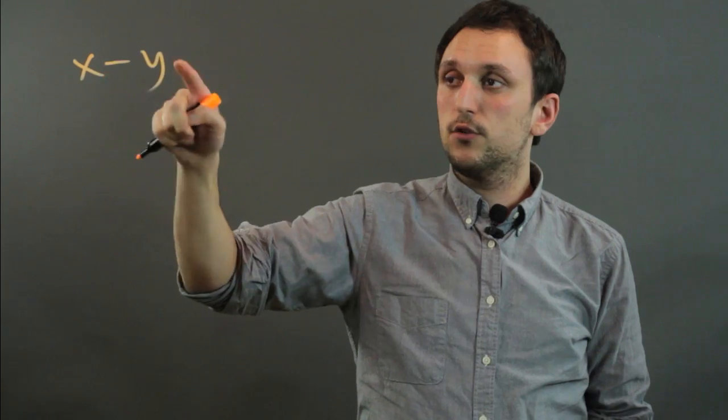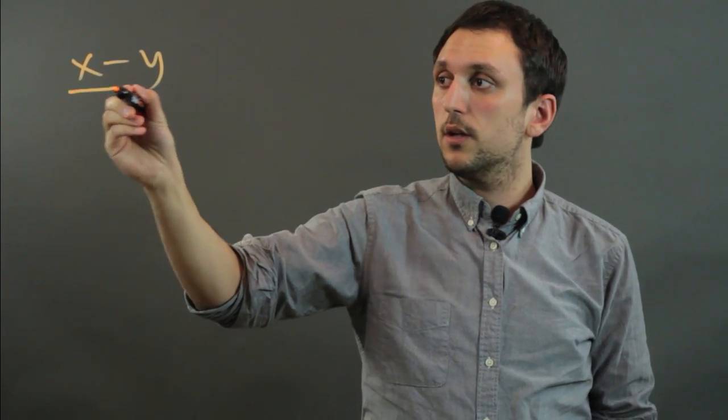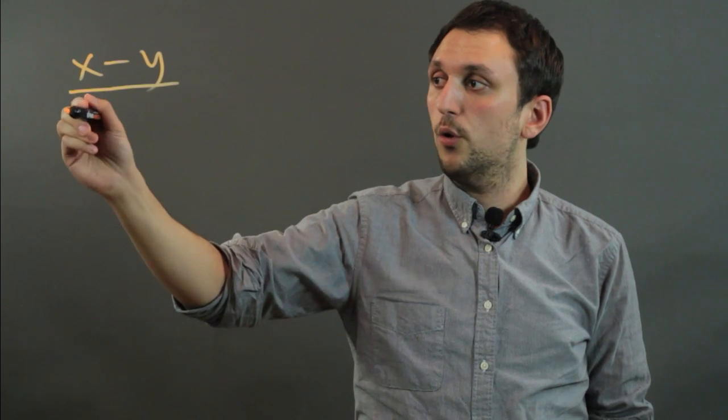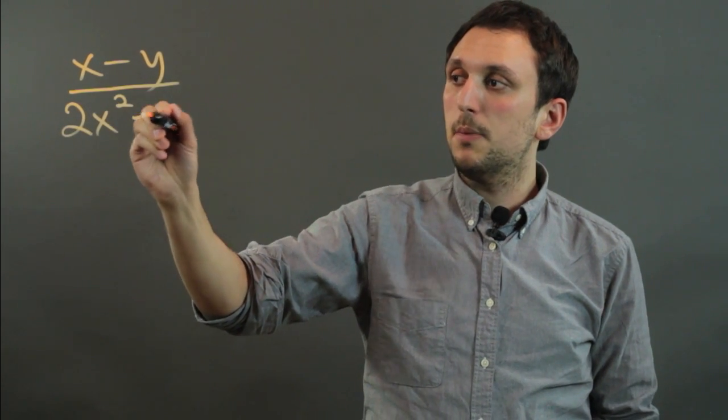So a polynomial is an expression with multiple terms. So for example, if we had x minus y, that's two terms. And we could say x minus y over 2x squared minus 4y.